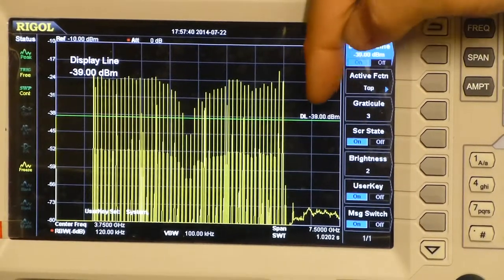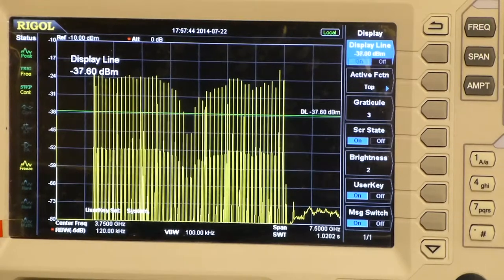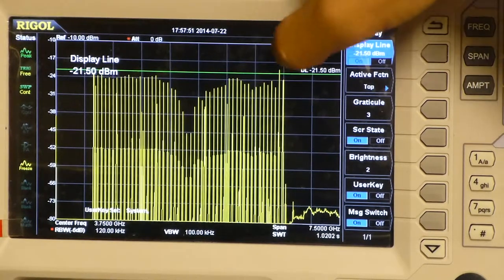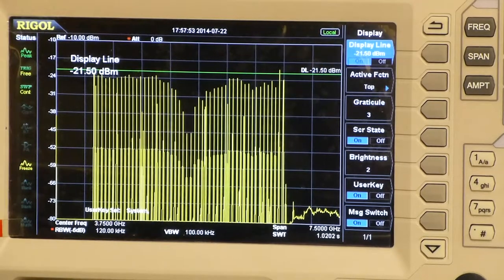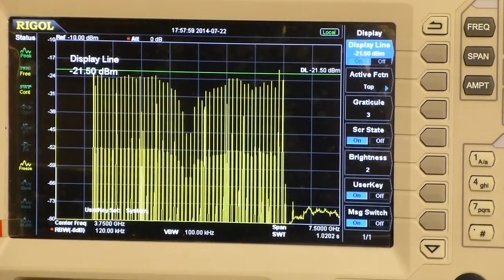And that display line gives me a very clear indication of a minimum level that I can set. So if I dial that up to say I want my emissions to be below this line, you can very clearly see that at one point it's above 21.5 dBm below 0. So that's a convenient way of putting a display line onto the screen.